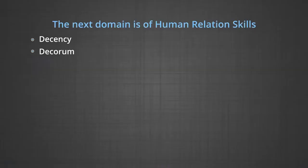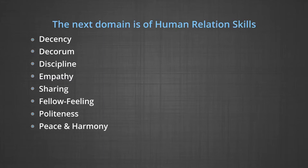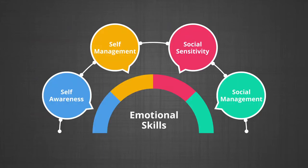The next domain is human relations skills, which include decency, decorum, discipline, empathy, sharing, fellow feeling, politeness, peace and harmony, and healthy competition, along with emotional skills such as self-awareness, self-management, social sensitivity and social management.